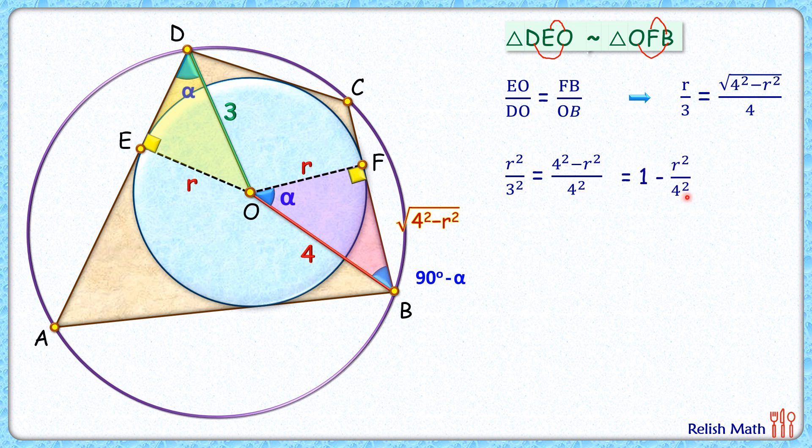Let's take all the terms with r on the left side. So we get r squared by 3 squared plus r squared by 4 squared equals 1. Taking denominator as 9 times 16, we get 25r squared upon 9 times 16 equals 1.